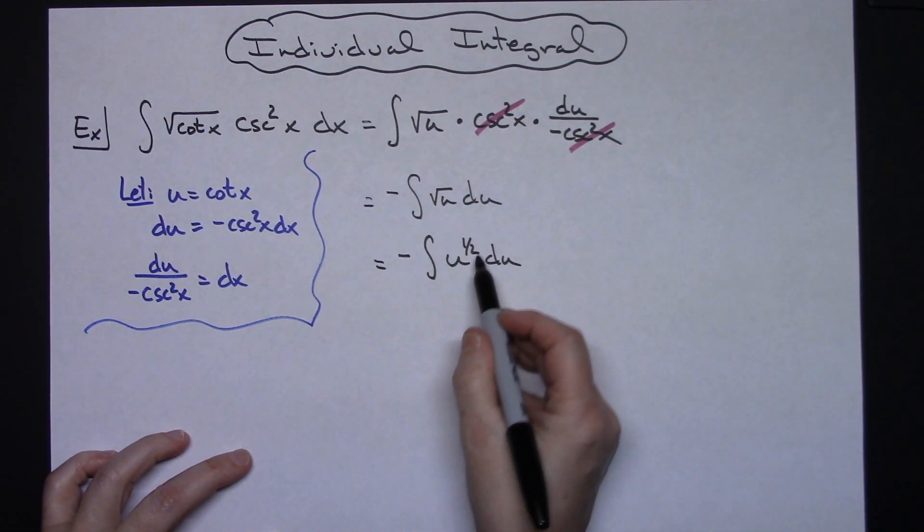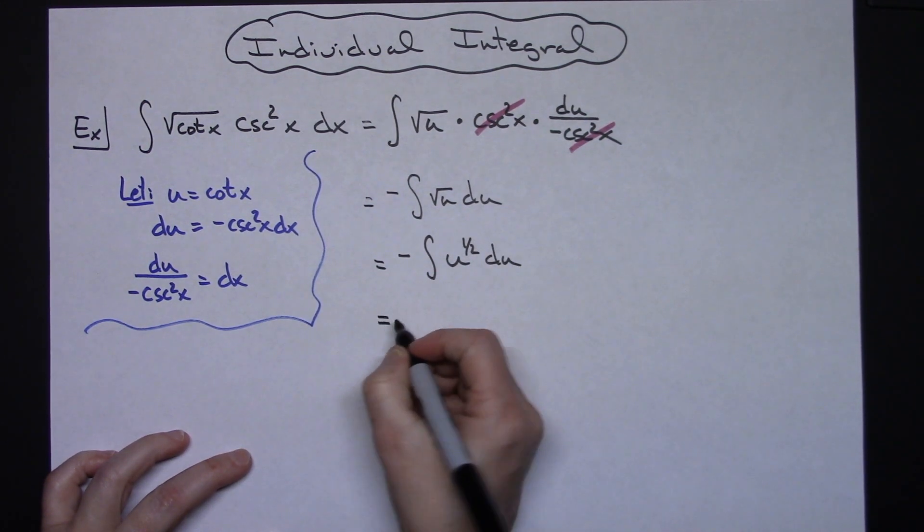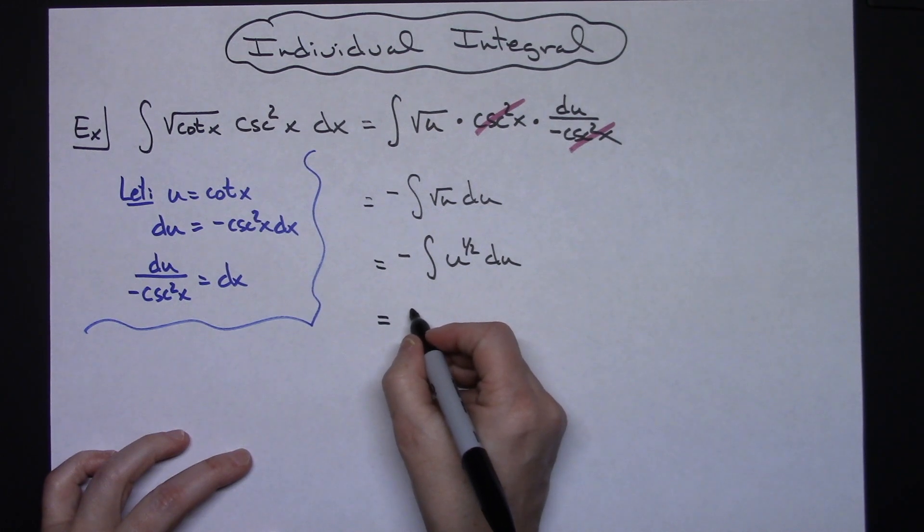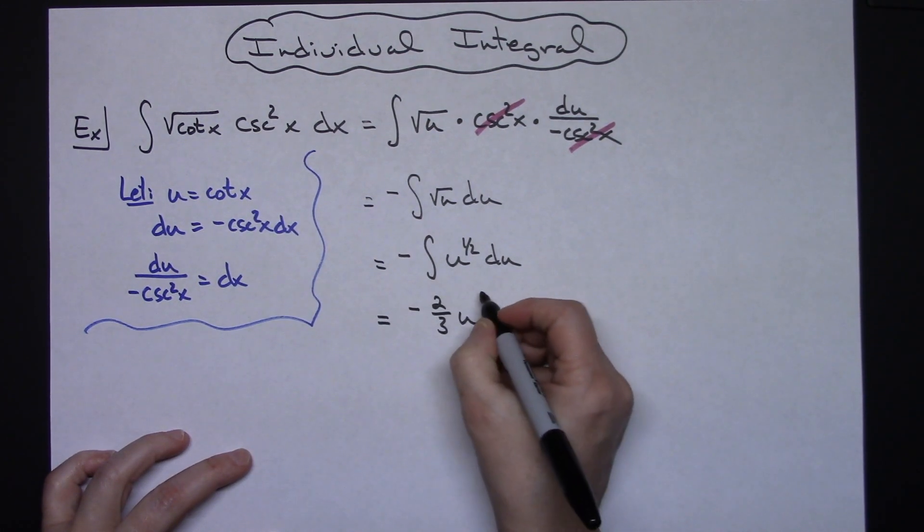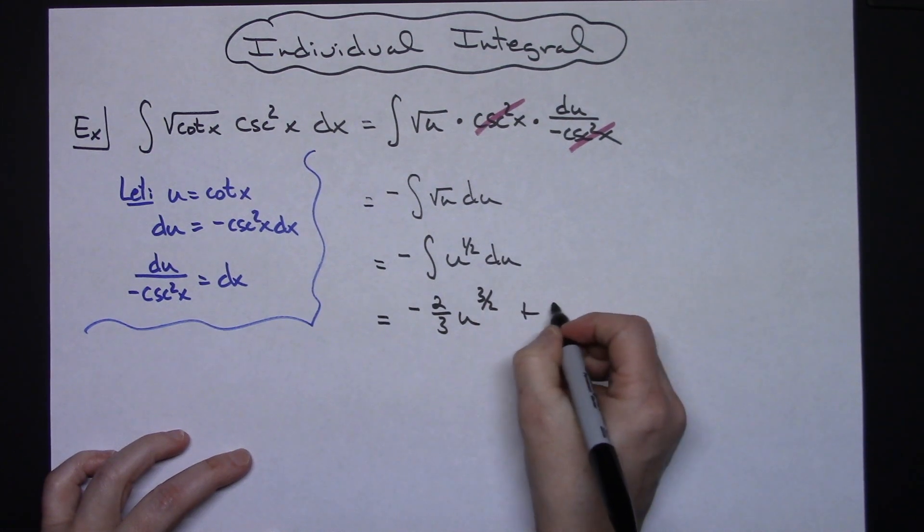I can integrate that by adding 1. That'll be 3 halves there so we can multiply in front by that reciprocal. So we'll have negative 2 thirds u raised to the 3 halves and then our plus c.